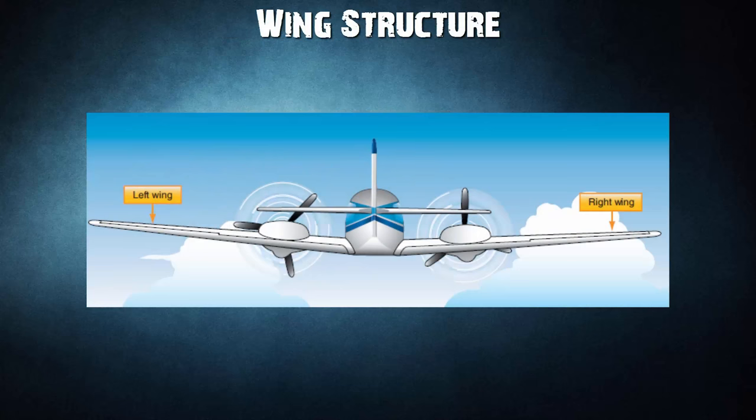Wing Structure. The wings of an aircraft are designed to lift it into the air. Their particular design for any given aircraft depends on a number of factors such as size, weight, use of the aircraft, desired speed in flight and at landing, and desired rate of climb. The wings of aircraft are designated left and right, corresponding to the left and right sides of the operator when seated in the cockpit.